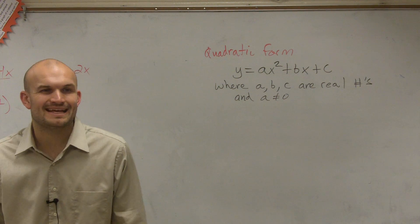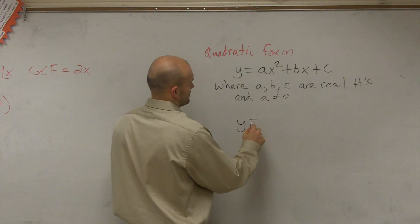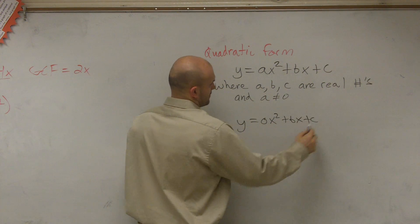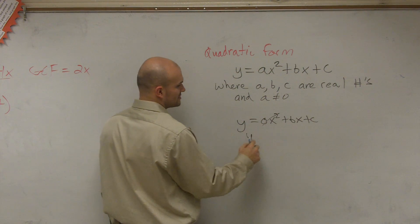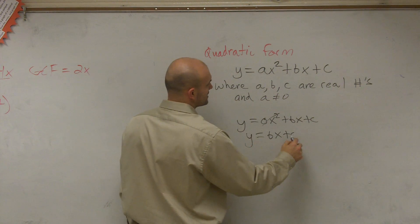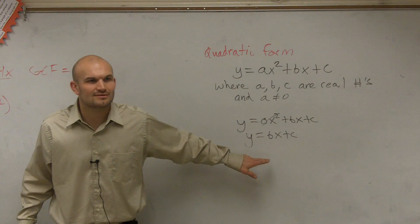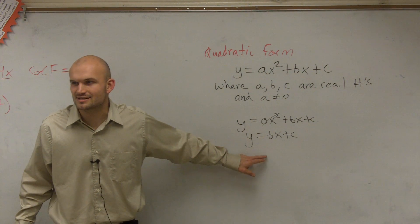Let's take a look at what if a did equal 0. Well, that would just go to 0. So you'd have y equals bx plus c. Does anybody remember an equation what bx plus c looks like? What kind of equation is this kind of similar to?